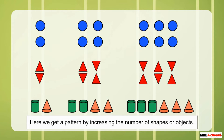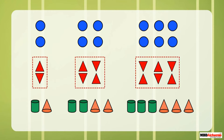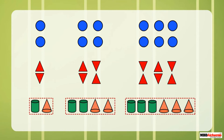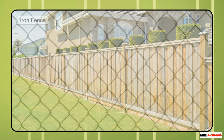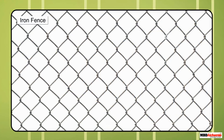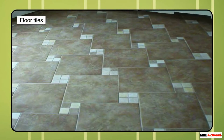Let us see some more patterns. Look at these patterns — here we get a pattern by increasing the number of shapes or objects. Notice the number of shapes in each pattern. We can see many such patterns around us.